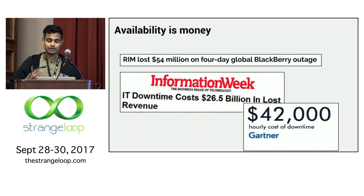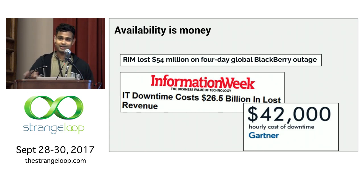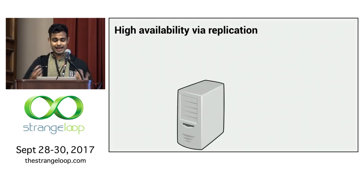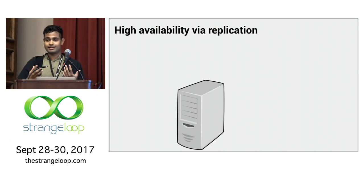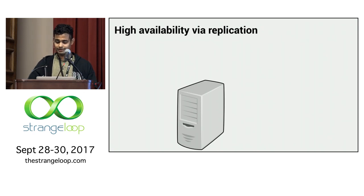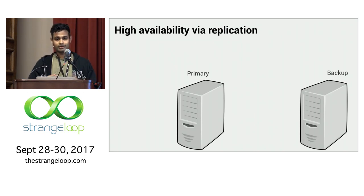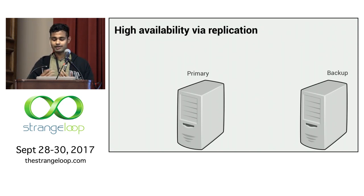At the same time, server code also needs to be highly available. Availability is money, and any losses in availability can have a catastrophic impact on revenue and trust. The standard way to achieve high availability is via replication — instead of a single server, you use redundancy. This makes applications highly available because when a primary server goes down, a backup can take over, minimizing downtime.